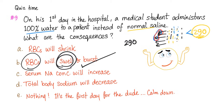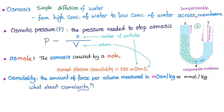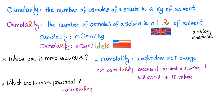The correct answer is B. Quick review on previous videos: osmosis is simple diffusion of water. Osmotic pressure is the pressure needed to stop osmosis. An osmol is osmosis caused by a mole. Osmolality is the amount of force per volume, measured in milliosmol per kilogram. Milliosmol per liter is called osmolarity. Osmolality is more accurate; osmolarity is more practical.